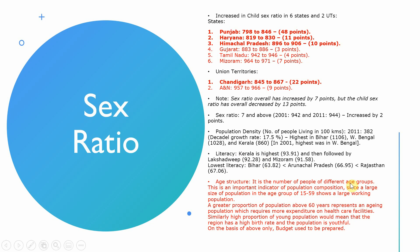Age structure refers to the number of people in different age groups and is an important indicator of population composition. A large proportion in the 15–59 age group shows a large working population. A high proportion above 60 represents an aging population. India's current population structure is around 27–28 years as the median age, so we say India is a young-age population.